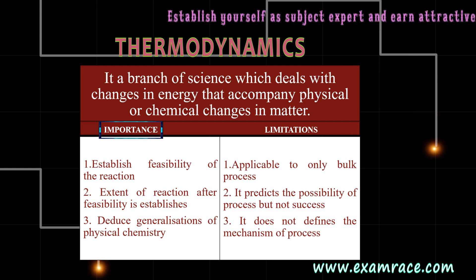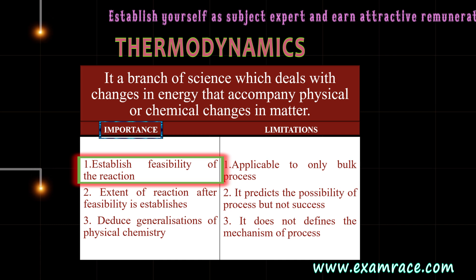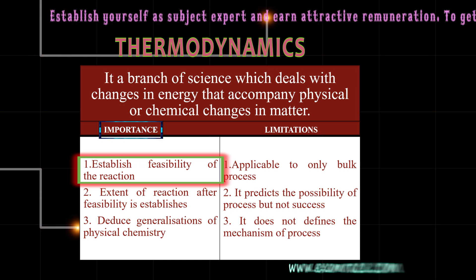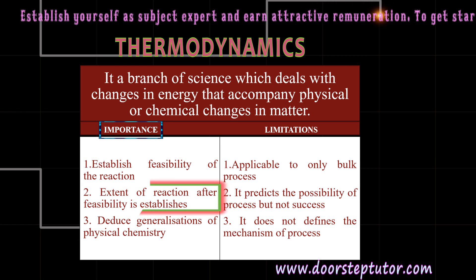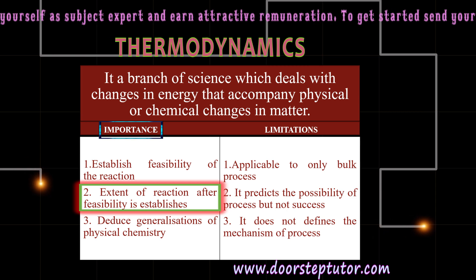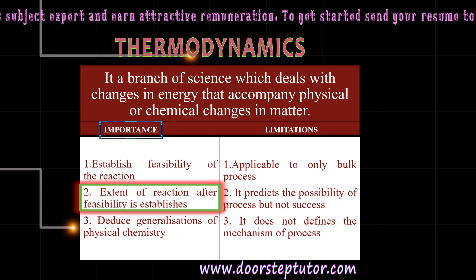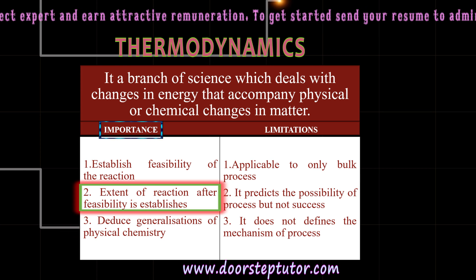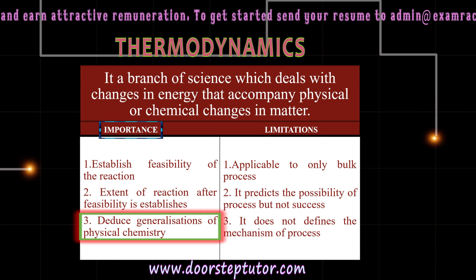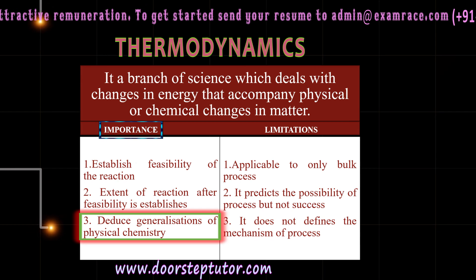Some of its importance are: it helps in establishing the feasibility of a reaction, that is whether the reaction will occur or not. It also helps in deciding the extent of reaction after feasibility has been established, that is whether the reaction will go backward or forward. It also helps in reducing the generalizations of physical chemistry, such as Raoult's law, Charles' law, phase law, etc.